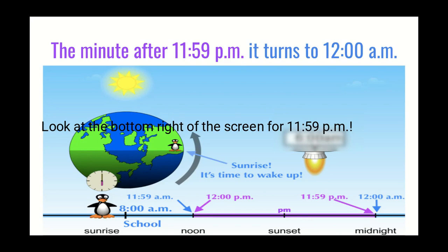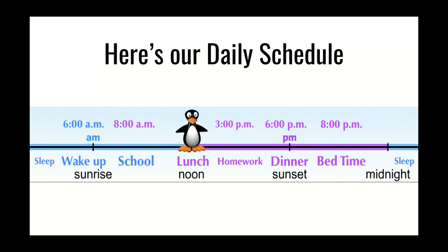So we just went through a timeline, and here's our daily schedule of a.m. and p.m. You can see all the things are on there: we're asleep, then 6 a.m. we wake up — that's when the sun rises. At 8 o'clock we go to school. In the middle, do you see where Gigi is? It's lunchtime and it's noon. Then 3 o'clock it's homework, then 6 o'clock dinner — see where it says sunset? And then 8 o'clock, bedtime. Then midnight, our new day starts over.